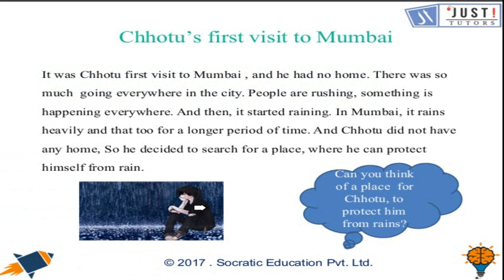Let's begin with the first point — Chotu's first visit to Mumbai. It was his first visit to Mumbai and he had no home. Mumbai is a busy city, people are rushing and something is happening everywhere. All of a sudden it started raining, and if you talk about Mumbai it rains heavily and for a longer period of time. Chotu had no home, so he decided to search for a place where he could protect himself from the heavy rain.